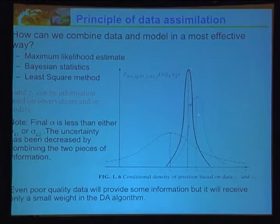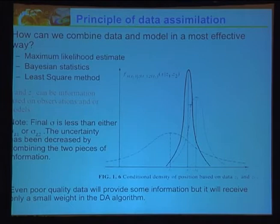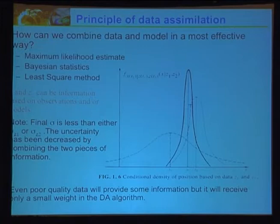One thing to notice is that the variance of this improved state — we would like it to be small, meaning high confidence in this new improved state. Even poor quality data can give you some information, but it will receive a small weight. In other words, you have to weight it correctly.